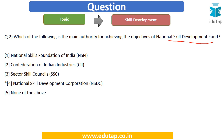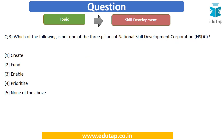The next question: which of the following is not one of the three pillars of National Skill Development Corporation or NSDC? The options are: (A) Create, (B) Fund, (C) Enable, (D) Prioritize, or (E) none of the above.